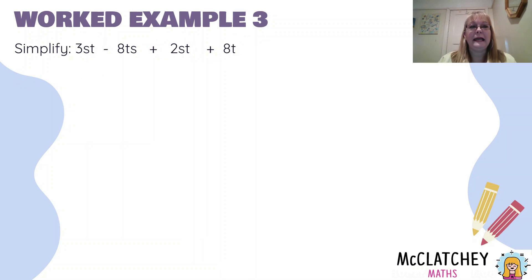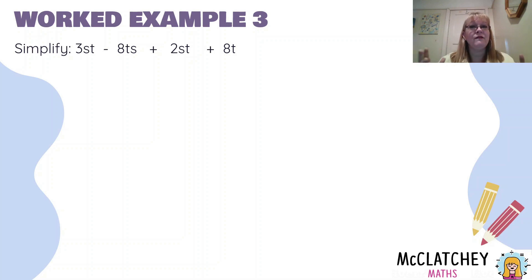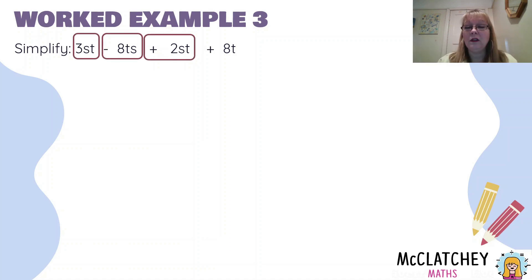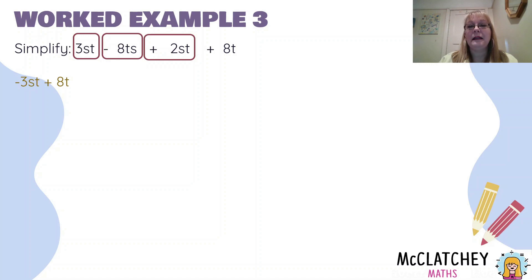Now we're getting a little more complicated: 3ST take away 8TS plus 2ST plus 8T. Remember from our previous video that we must match the letter combination, but the order doesn't matter — ST is the same as TS, because 4 times 3 is the same as 3 times 4. So 3ST, minus 8TS, and plus 2ST are all like terms, and 8T hangs on the end as not a like term. So: 3 take away 8 gives me negative 5, plus 2 gives me negative 3ST, plus 8T on the end.